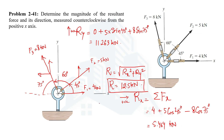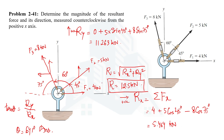We still need to find the direction. The direction is calculated using the formula tan θ = Ry / Rx. Substituting the values of Rx and Ry and taking the inverse tangent, we get the angle θ = 64.1°. This is the direction of the resultant force measured counterclockwise from the positive x-axis.